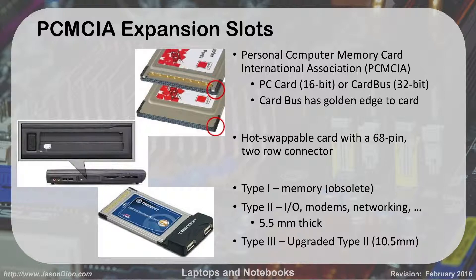They're little cards — a USB expansion card for USB 2.0 would just slide into the side of the machine until it clicks into place. We have PC cards, which are 16-bit, and Cardbus, which is 32-bit. The Cardbus cards have a golden edge instead of a silver edge. They're hot-swappable, so you can take them in and out while the laptop is running. They have a 68-pin connector with two rows of 34 pins each.